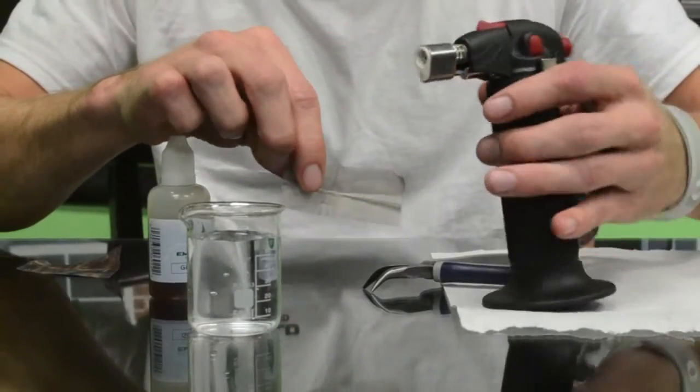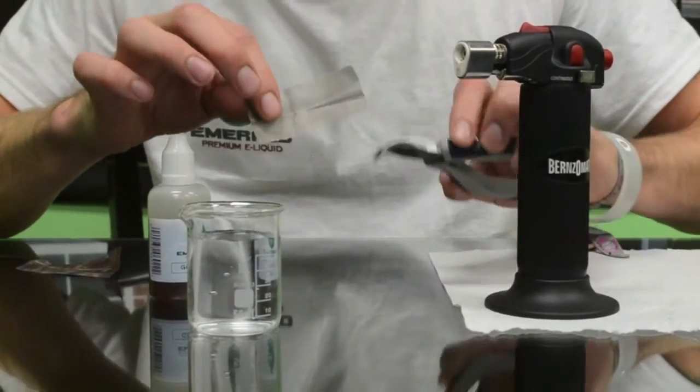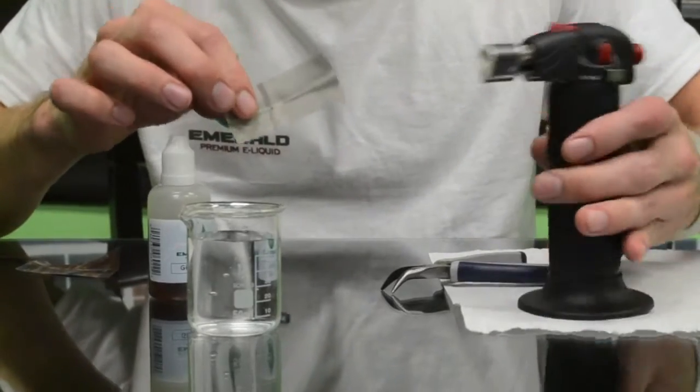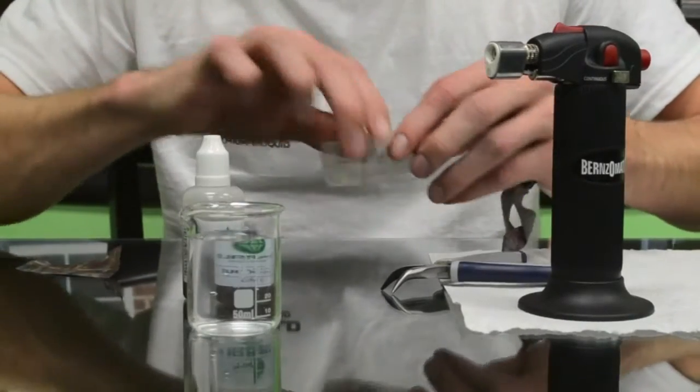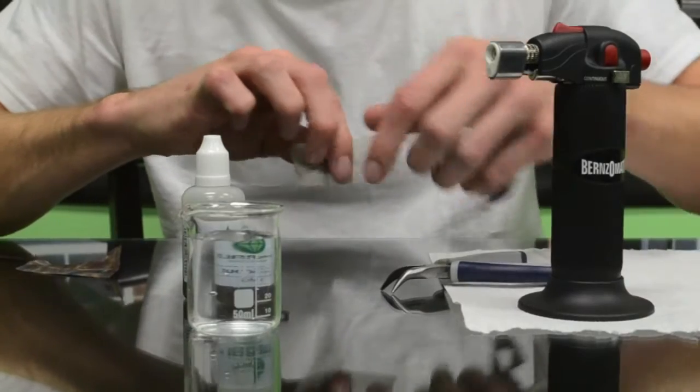Once you have the stainless steel mesh wick, you're going to need a pair of pliers, a blowtorch or a lighter, a bottle of liquid, probably a paper towel, and some water nearby.